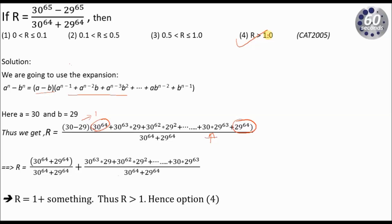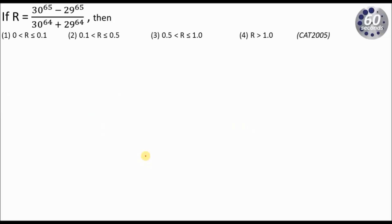Now let's look at an alternative approach, in case you don't know, or can't recall, the identity that a to the power n minus b to the power n equals a minus b times the expansion. The alternative approach is to take baby steps — use small powers and see what happens. In all likelihood, whatever happens with small powers will also happen with larger powers. Since 65 is odd, I'll take a smaller odd number to replicate the case.